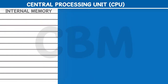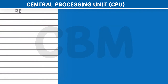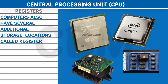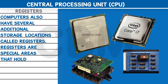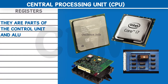Internal memory is also known as primary storage or main memory. Computers also have several additional storage locations called registers. Registers are special areas that hold data and instructions temporarily during processing. They are parts of the control unit and ALU, rather than the memory.